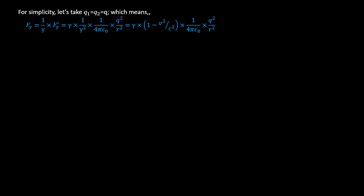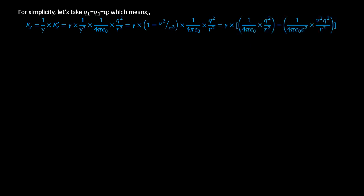Expanding by multiplying gamma through both terms: Fy = gamma · (1/4πε₀)(q²/r²) minus gamma · (v²/c²) · (1/4πε₀)(q²/r²). Here v² and c² are separated into their respective factors. Hope there is no confusion.